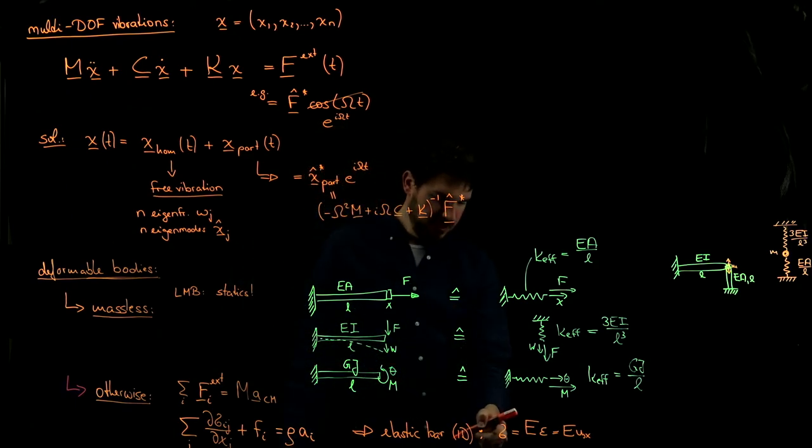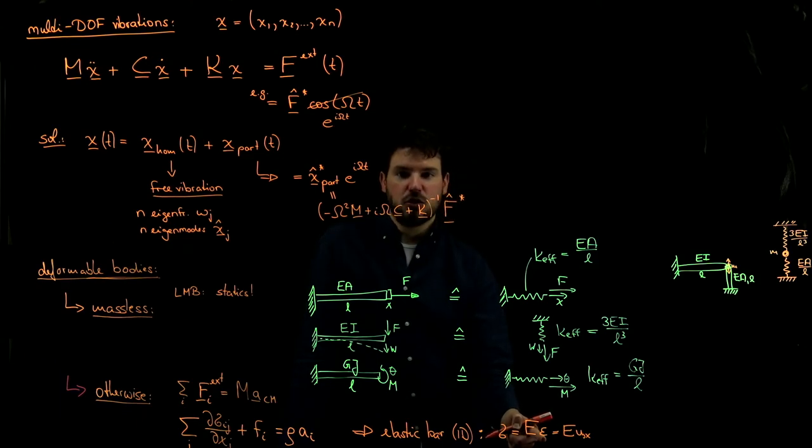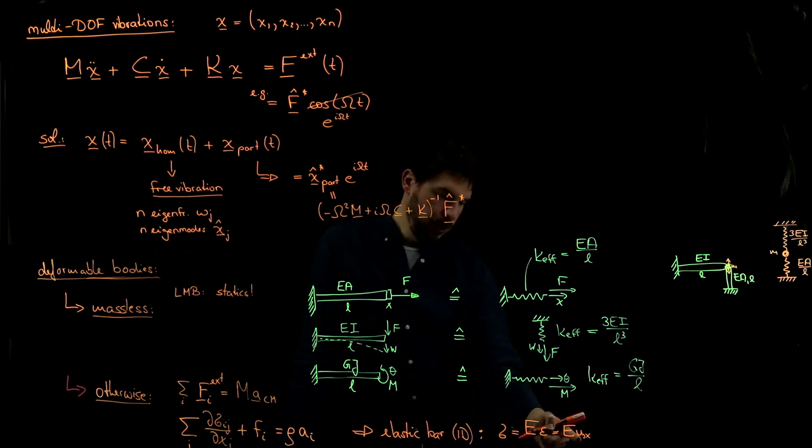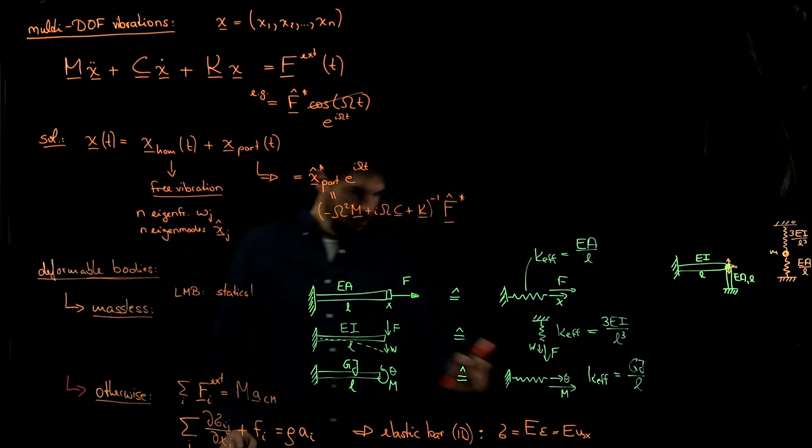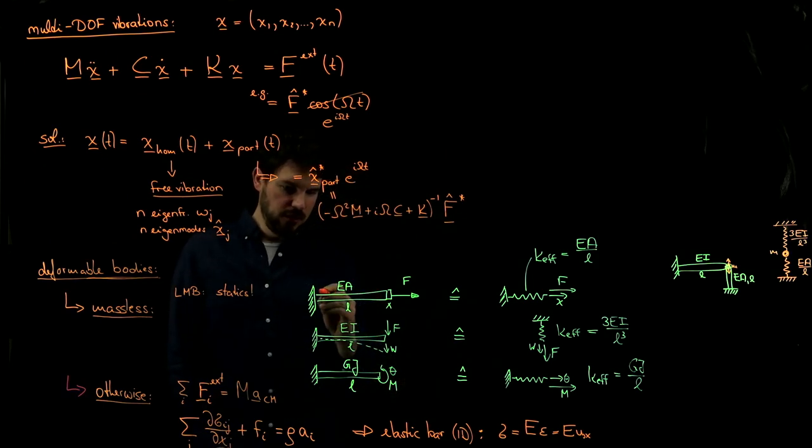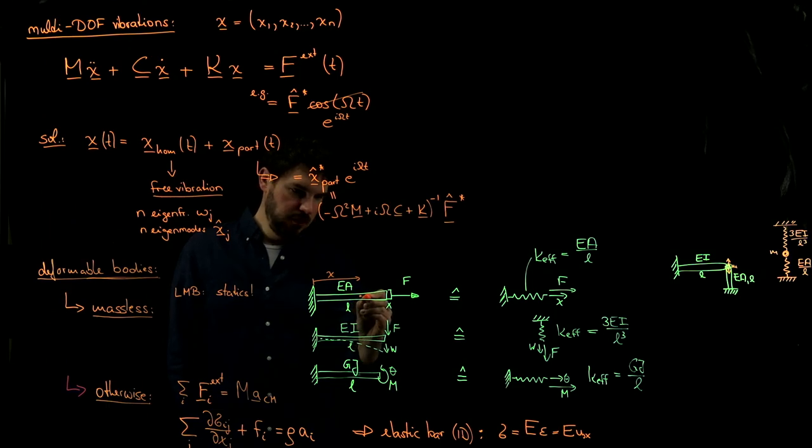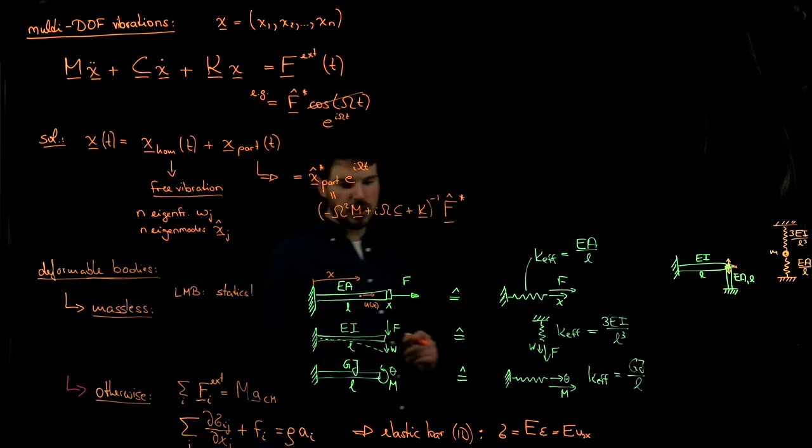So to make things clear here, sigma is stress (Spannung), epsilon is strain (Dehnung), u is displacement (Verschiebung), which essentially means if we were sitting in a bar, then at every point x this point can be moving to the right. And this motion is what we call the displacement u of x.